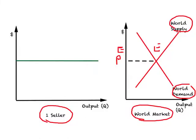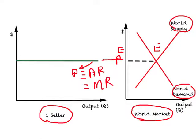This world price is determined in the world market. From the perspective of one seller who is very small relative to the world market, the seller will take this world price as given and try to do the best they can. The green line represents the demand curve faced by this small seller, defined at the level of world prices. We know price equals average revenue, and if the firm is a price taker — as in perfect competition — this also equals marginal revenue. So a single firm under perfect competition faces a horizontal demand curve.